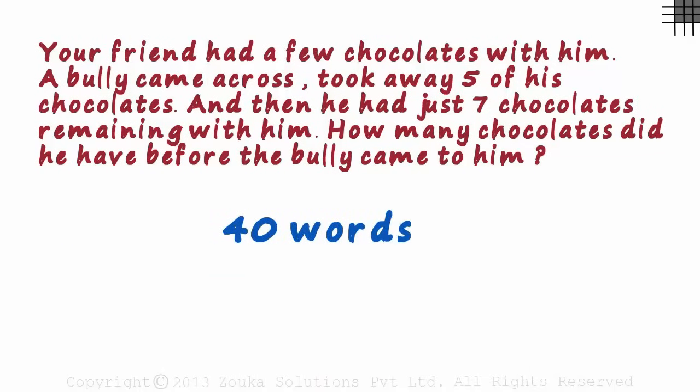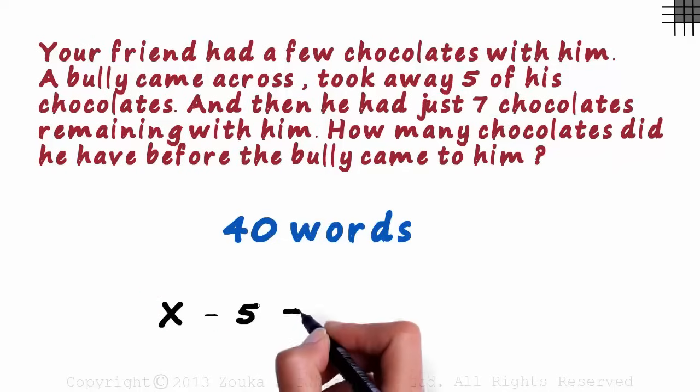Let's see if we can shorten the question a bit. Assume your friend had x chocolates with him. The bully took away five of his chocolates. So we subtract five from x. And after all this, your friend was left with seven chocolates. This entire thing will then equal seven.